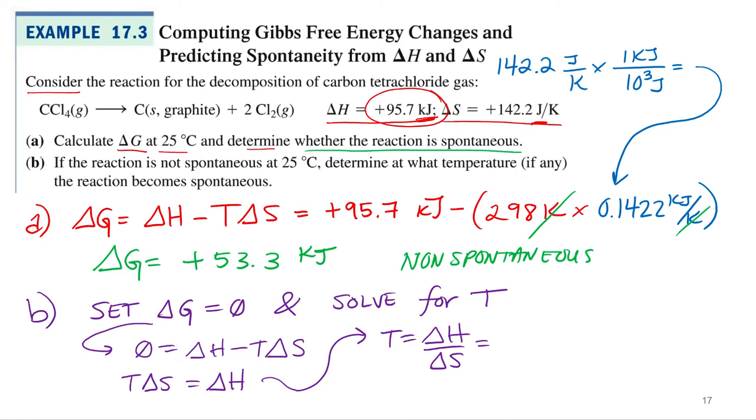We've already got our enthalpy and our entropy. Our enthalpy was a positive 95.7 kilojoules. Our delta S, and we are going to have to use the one we converted to kilojoules, so it's plus 0.1422 kilojoules.